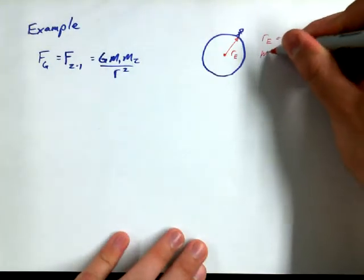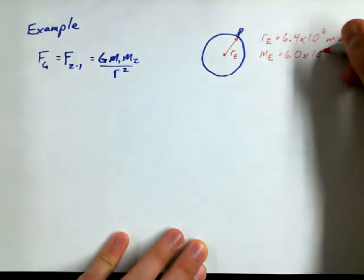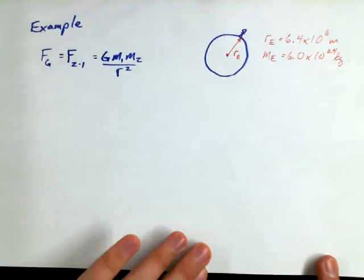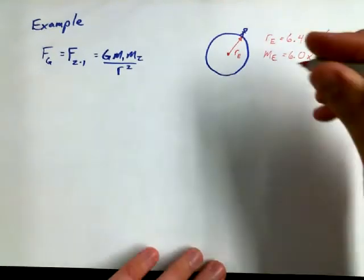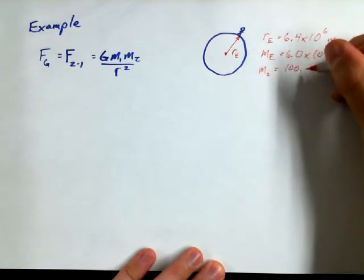The mass of the Earth is approximately 6.0 times 10 to the power of 24 kilograms. And we're going to do this for a mass, a person with a mass of 100 kilograms.